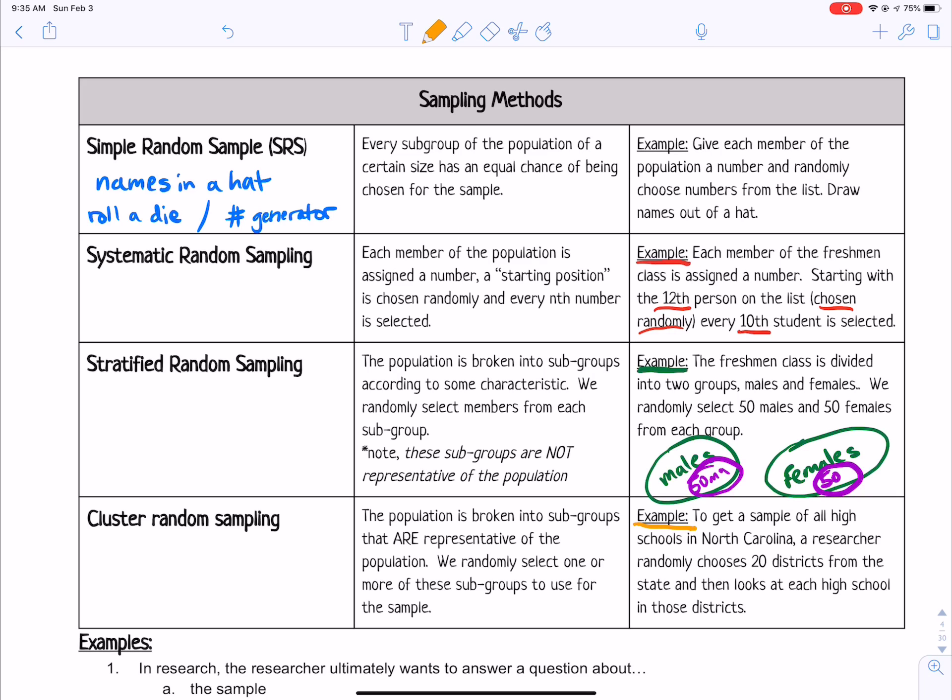To get a sample of all high schools in North Carolina, a researcher randomly chooses 20 districts from the state and then looks at each high school in those districts. So it's like having all these districts. I'm not necessarily going to draw all 20 of them, but let's just imagine there are a bunch of school districts. And they randomly select 20 of them. But then they sample all the high schools in that entire district from the ones they've sampled.